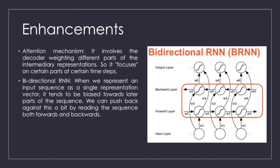There are two enhancements used. First being attention mechanism, it involves the decoder weighting different parts of the intermediary representations. So it focuses on certain parts at certain time steps. The other being bidirectional recurrent neural network, when we represent an input sequence as a single representation vector, it tends to be biased towards later parts of the sequence. We can push back against this a bit by reading the sequence both forwards and backwards.